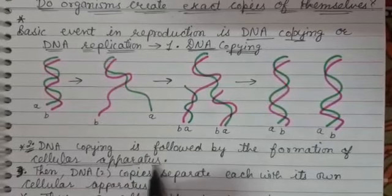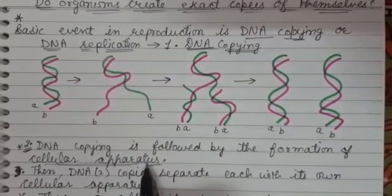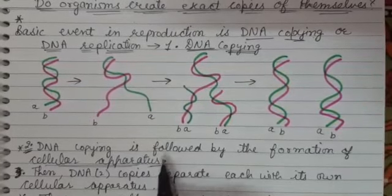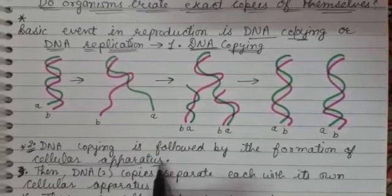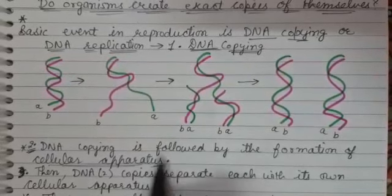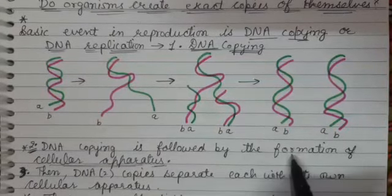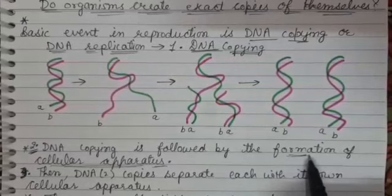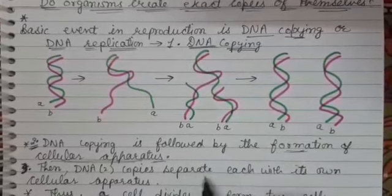The DNA copying is then followed by the formation of cellular apparatus. Cellular apparatus means all the cellular organelles like mitochondria, chloroplasts if it is a plant cell, ribosomes, lysosomes. All these cellular apparatus copy themselves.